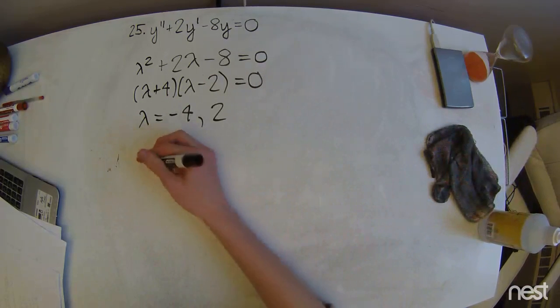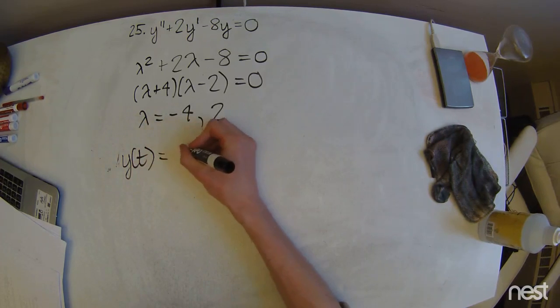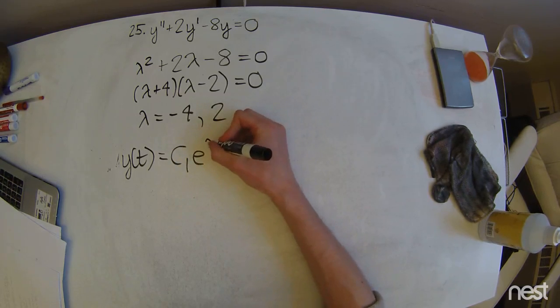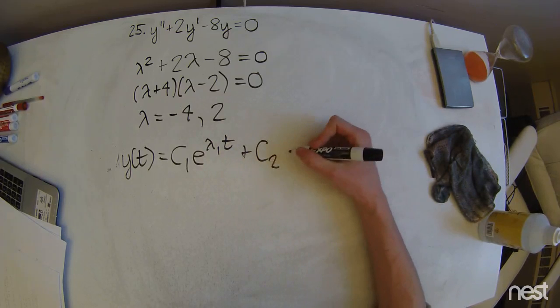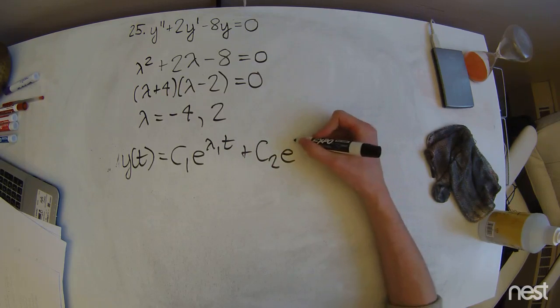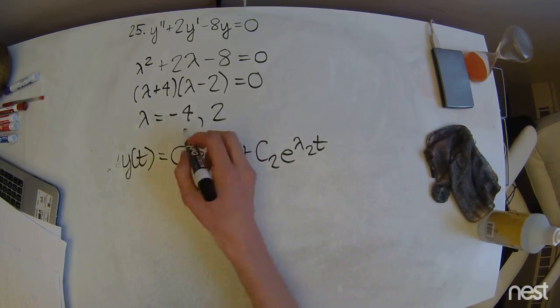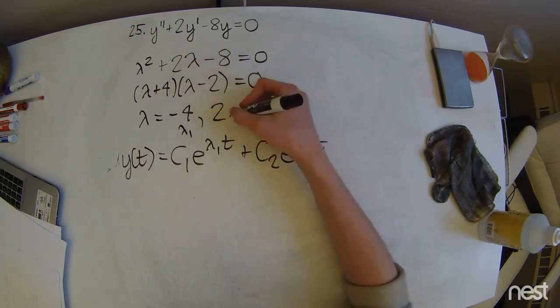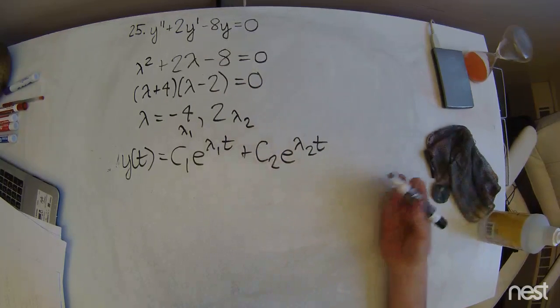...and not repeated roots, is going to look something like y of t equals integrating constant times e to the lambda 1 of t plus another integrating constant times e to the lambda 2 of t. So we can just take this as lambda 1, this first negative 4, and lambda 2 as lambda 2, as you might expect.